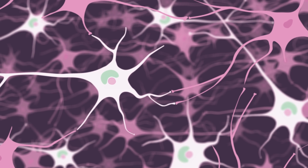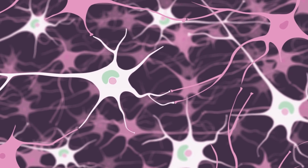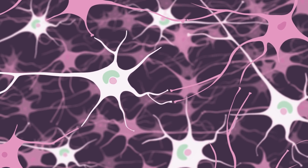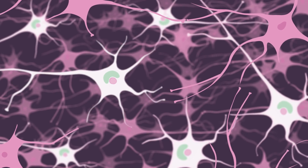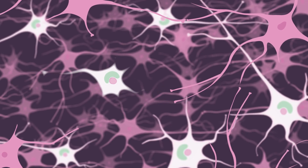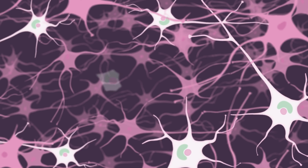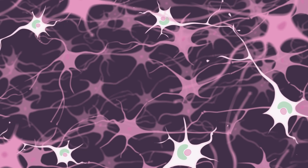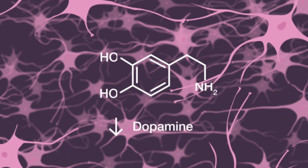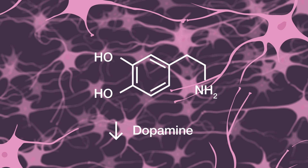The neuron will be afflicted, lose contact with its neighbors, and gradually disappear. The loss of neurons in the substantia nigra leads to a significant drop in dopamine levels and causes the emergence of Parkinson's disease symptoms.